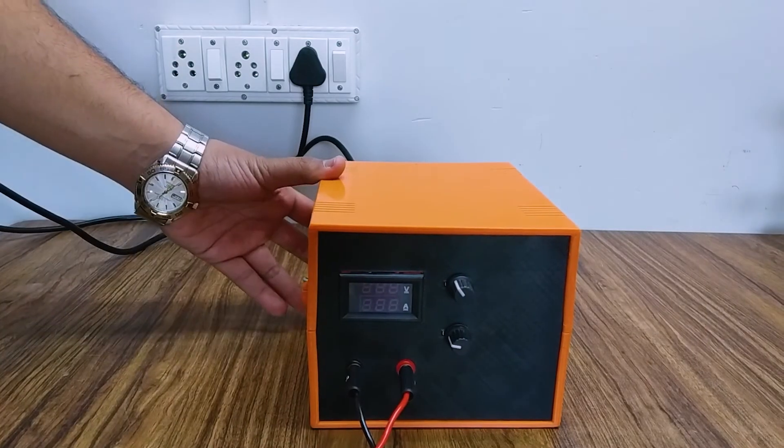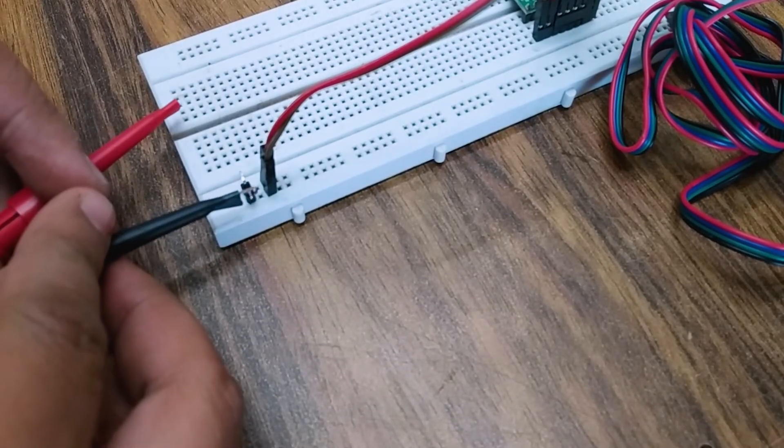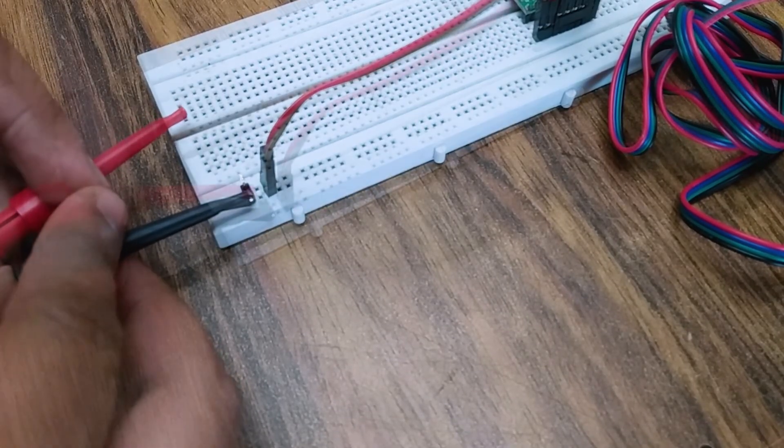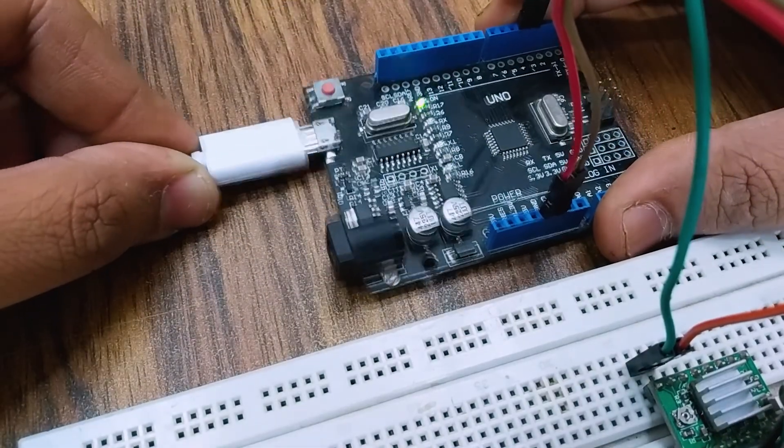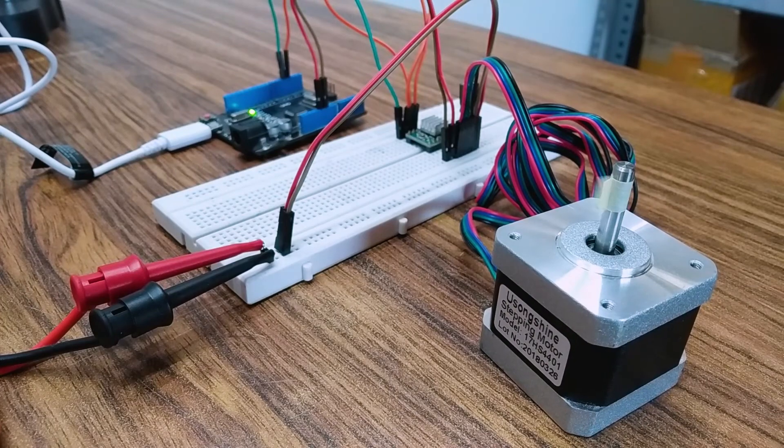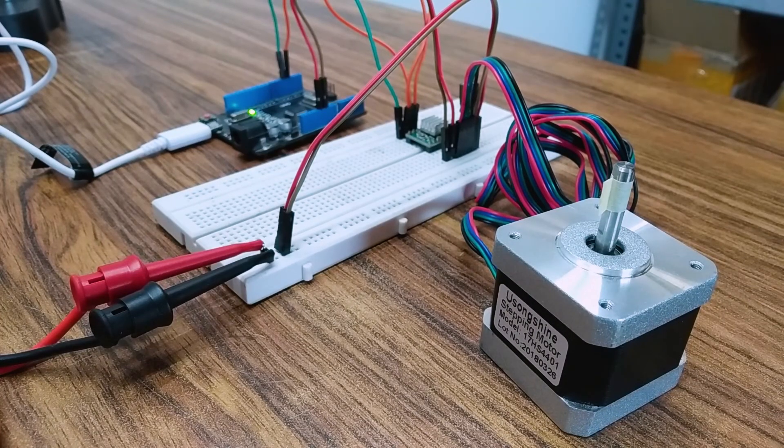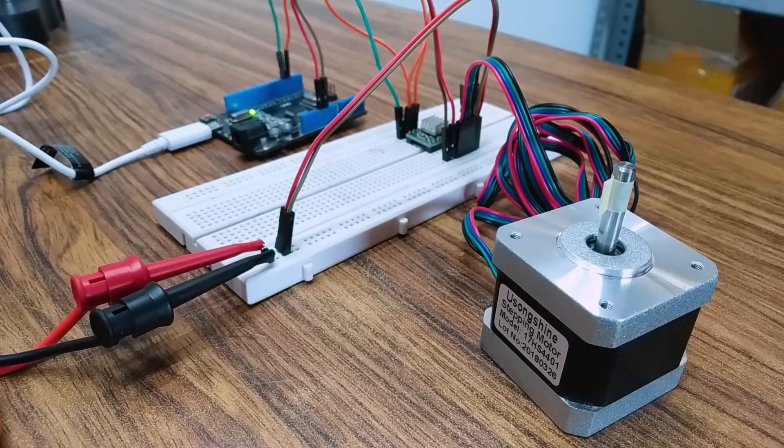Connect the power supply to the driver input. In my case my DIY lab bench power supply. Connect the Arduino via USB. Upload the code and you see the motor running. If not make sure you have connected all pins correctly and followed all the procedures.